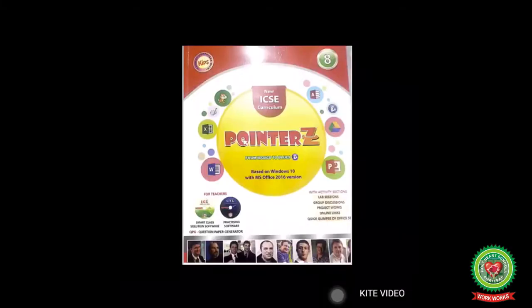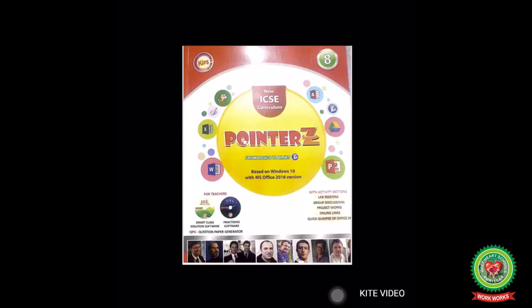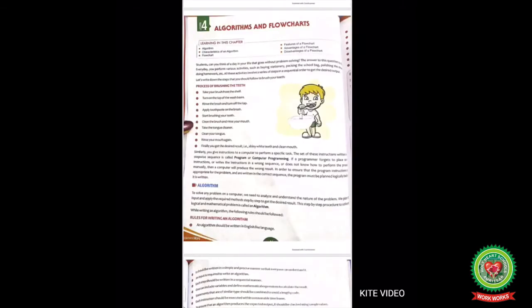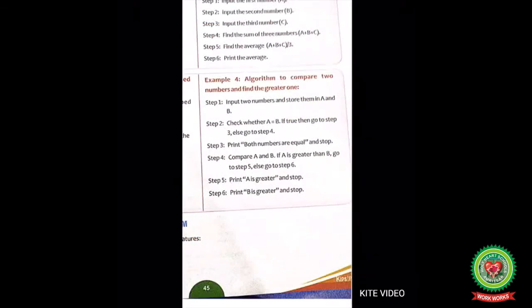Hello students, let's start computer class. Open your books on page number 44, lesson number 4: algorithms and flowcharts. In the previous class, we discussed example 4 on page number 45 — an algorithm to compare two numbers and find the greater one.